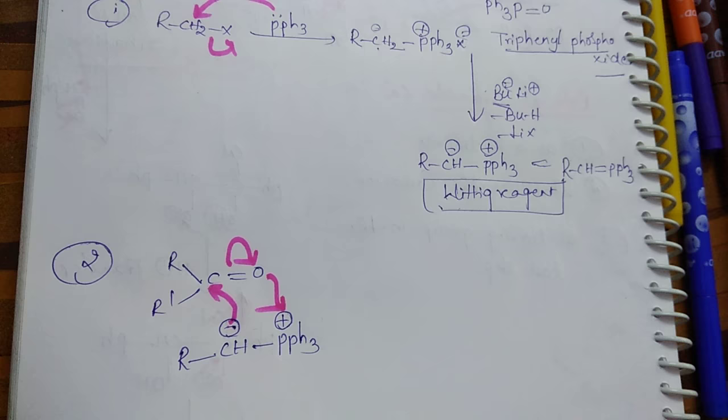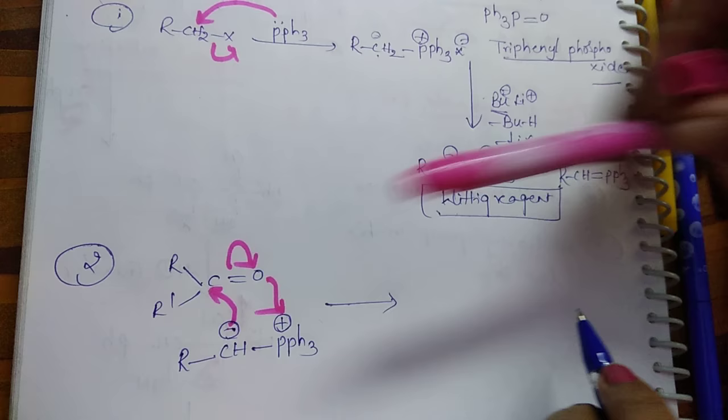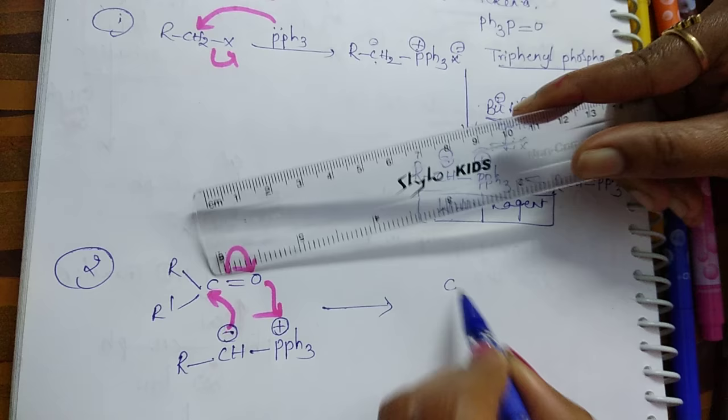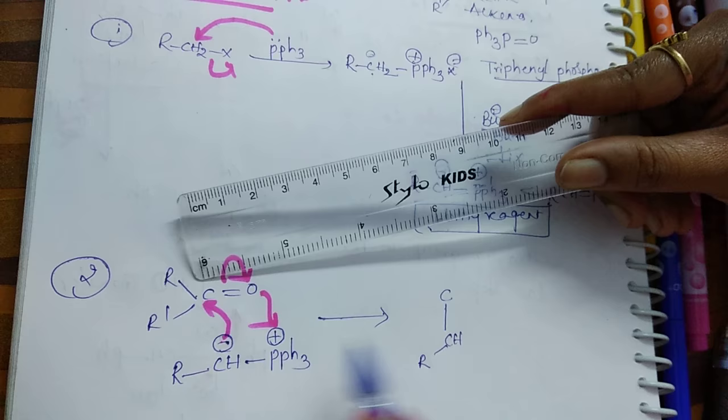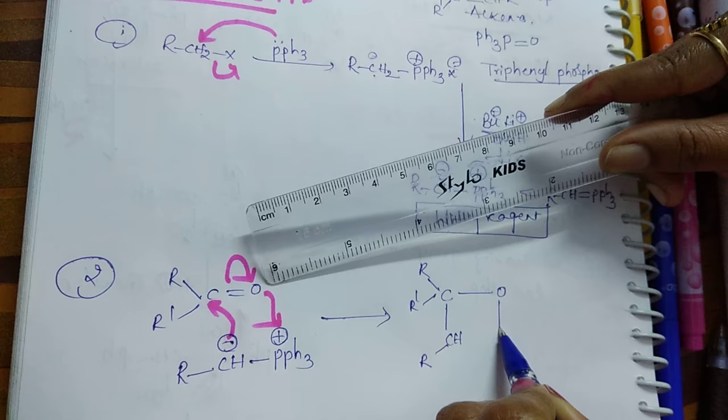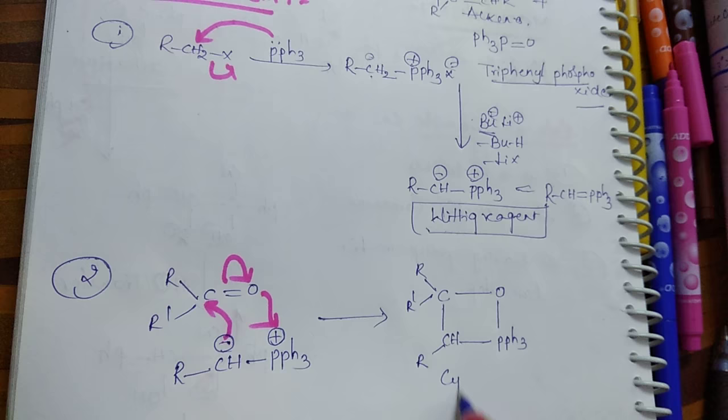...the formation of a cyclic transition state. See here, C-C, to this - the CH is donated which is having an alkyl group, and this is having two alkyl groups, oxygen is there, next P-Ph3. This is called the cyclic transition state.